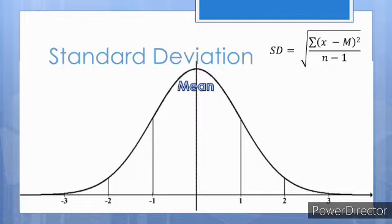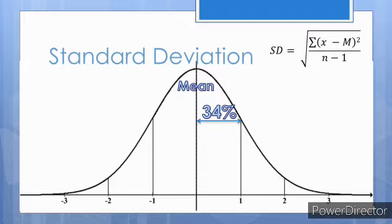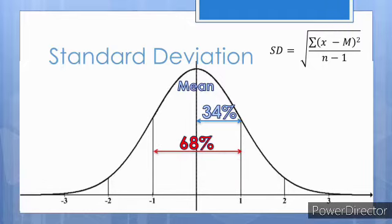In a normal distribution, approximately 34% of scores fall between the mean and one standard deviation above the mean. Therefore, based on its symmetry, approximately 68% of scores fall between one standard deviation above and one standard deviation below the mean.